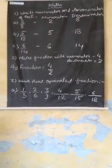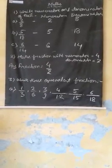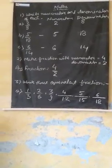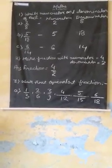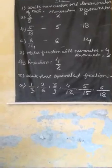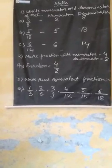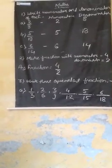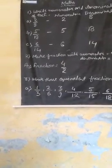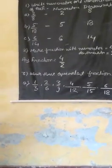Question number 3: make a fraction with numerator and denominator. Here the numerator is 4 and the denominator is 2. To make a fraction, it has to have an upper part and a lower part.